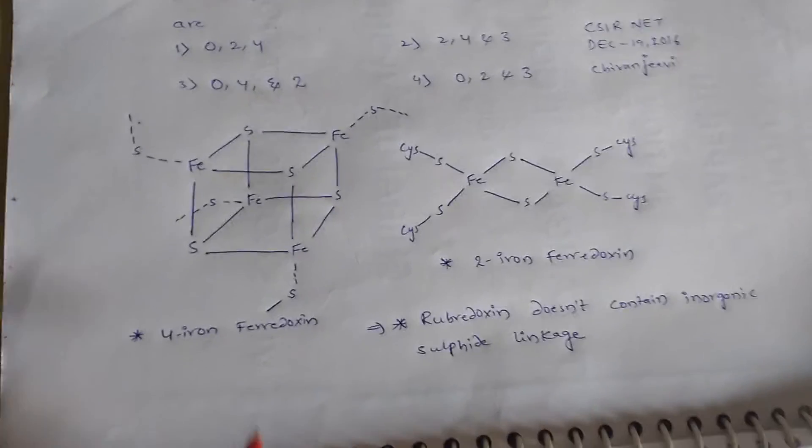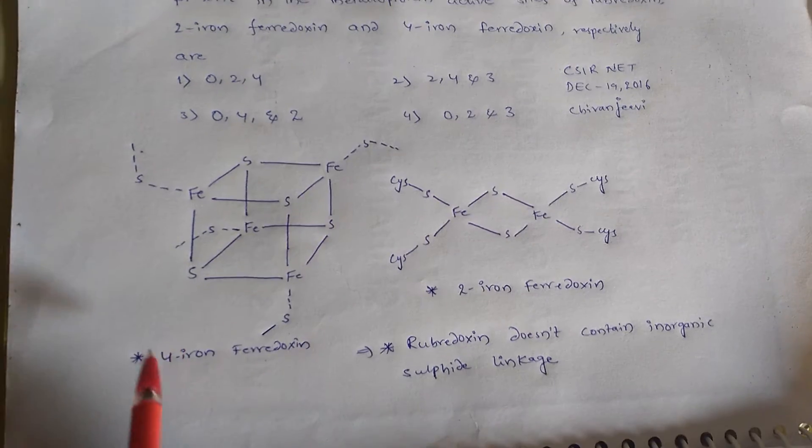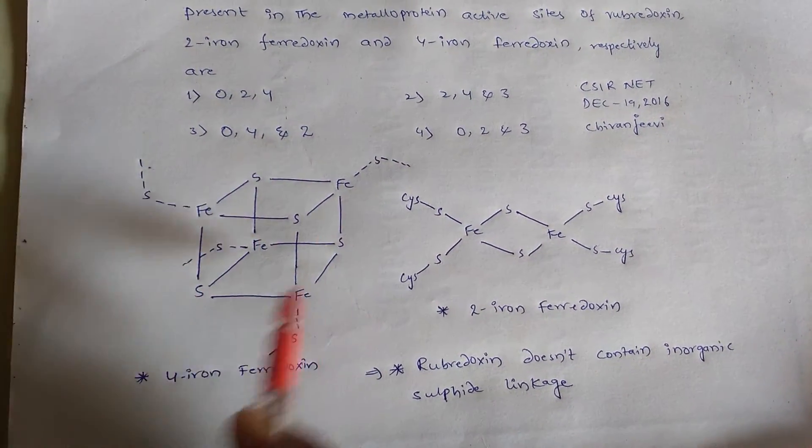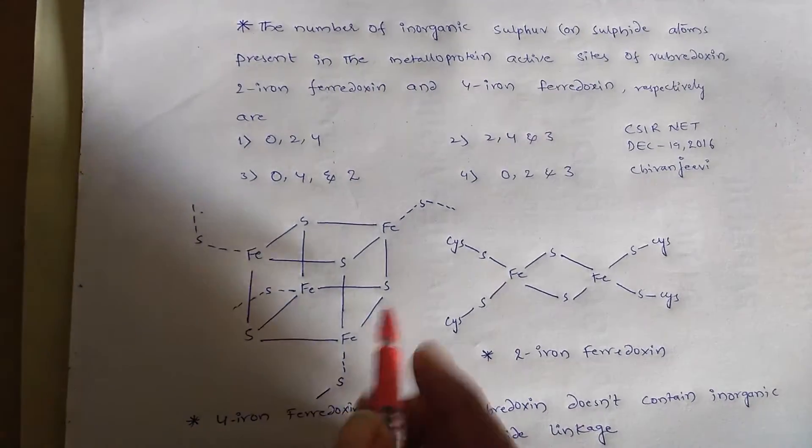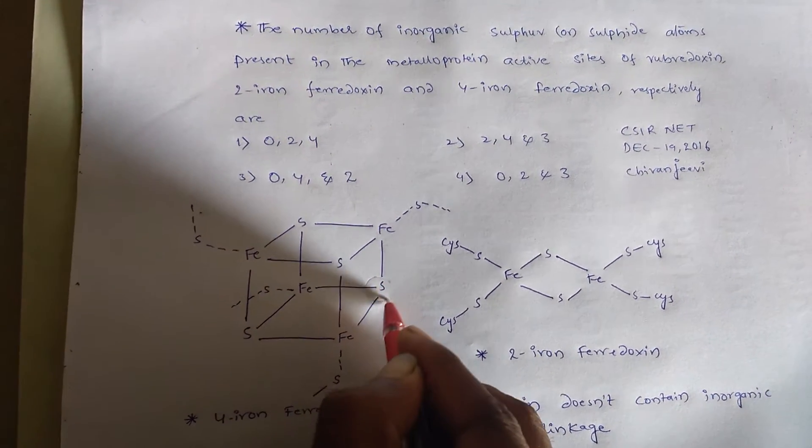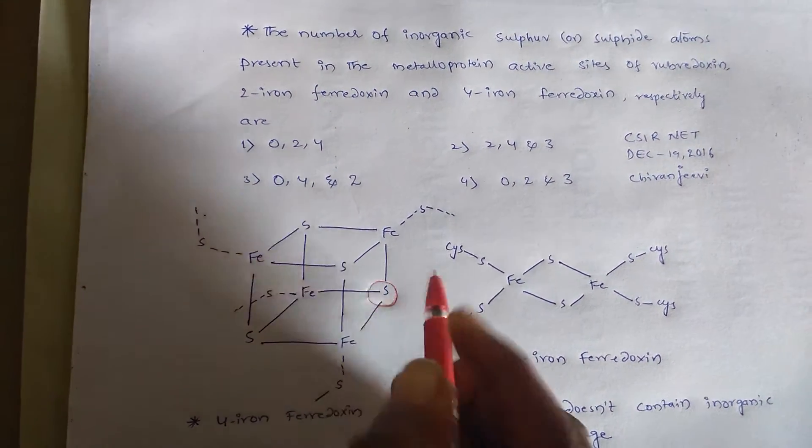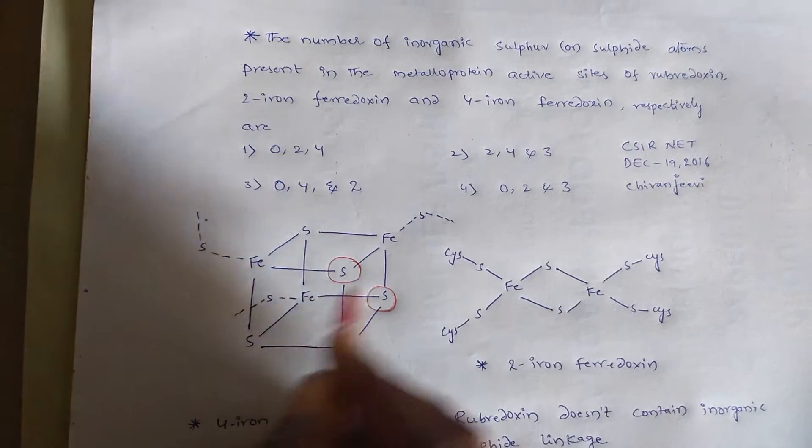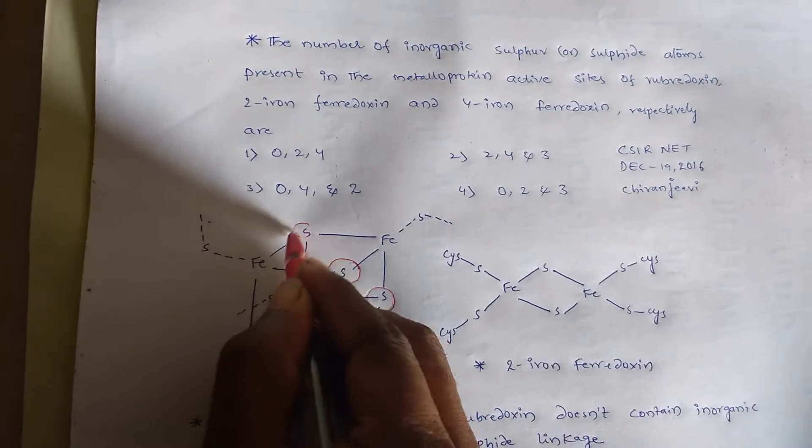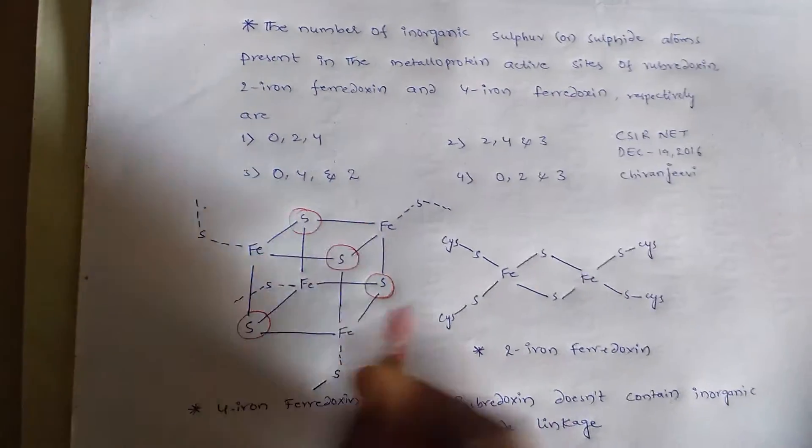If you observe, this is the 4-iron ferredoxin cubane structure. In this, we have inorganic sulfur. These are inorganic sulfurs.